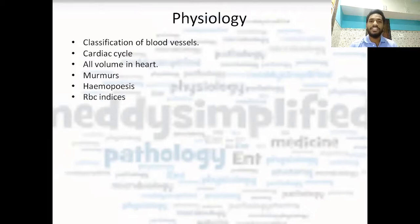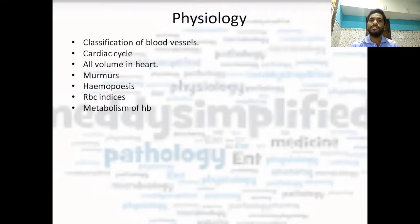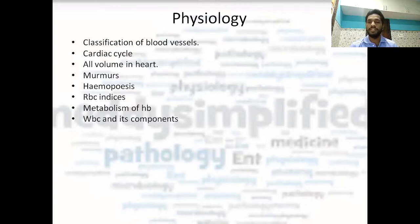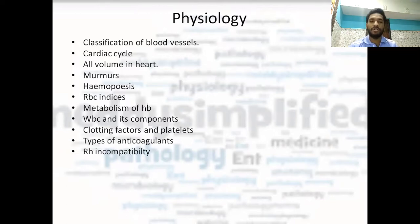And hemopoiesis — RBC indices: MCH, MCV — their reference ranges are important. Metabolism of hemoglobin is studied in both physiology and biochemistry. WBC and its components — lymphocytes, monocytes — their function in immunity is important. Clotting factors and platelets, and blood groups for ABO antigens. RH incompatibility — that is hydrops fetalis — is also studied in pediatrics but you should know this here as well. Mechanism of iron absorption.